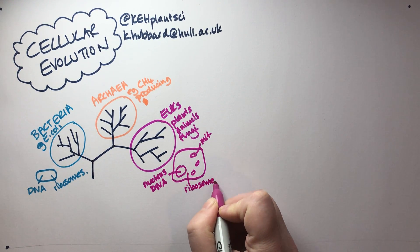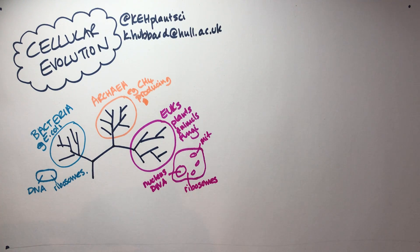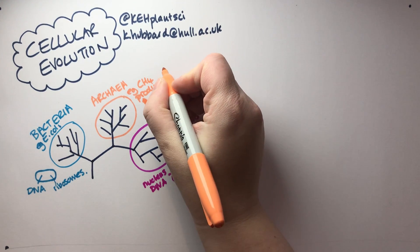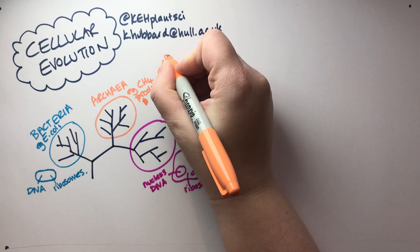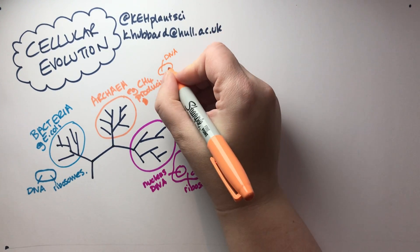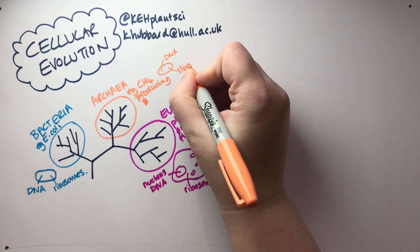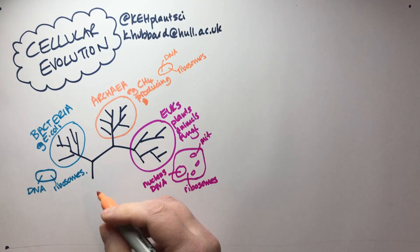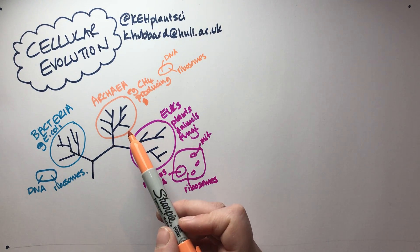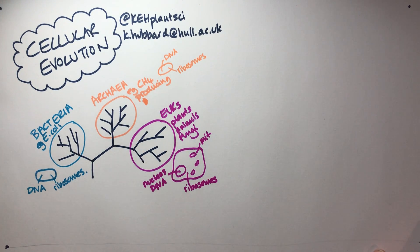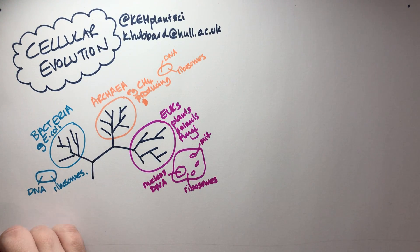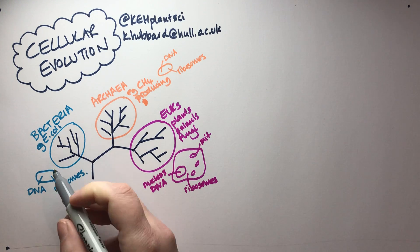Remember, ribosomes are the structures responsible for protein synthesis. I forgot to mention the archaea cell structure — they're also relatively small cells, they've got a DNA genome and they've got ribosomes. So superficially they look a bit more like the bacteria, but if you get down into the genetics they're more closely related to the eukaryotes, and it's the bacteria that are off on their own as a side group.